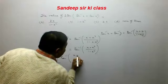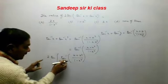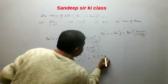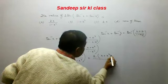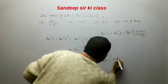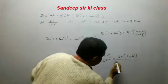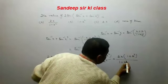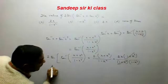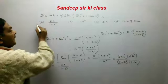The expression becomes 2·tan(tan⁻¹((x + x³)/(1 − x⁴))). Since tan and tan⁻¹ cancel, we get 2·(x + x³)/(1 − x⁴). Factoring: 1 − x⁴ = (1 + x²)(1 − x²), and x + x³ = x(1 + x²). Cancelling (1 + x²), we get 2x/(1 − x²). So option A is correct.